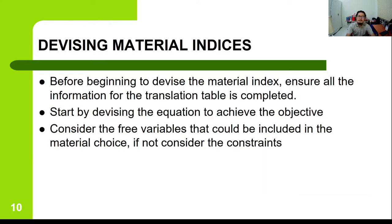Next, how do we devise the material index from the translation table? We already talked about generating the translation table from abstract information. Now we use the specific information gathered to derive the material index. Before we begin, we must ensure all information has been translated into the translation table. We start with the objective equation and consider the free variables that could be included in the material choice; if not, we consider the constraints.